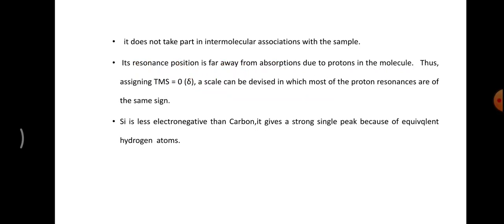Because of these reasons, the delta value assigned for TMS is 0. A scale can be devised in which most proton resonances are of the same sign. The silicon at the center is less electronegative than carbon, so TMS gives a strong single peak because of equivalent hydrogen atoms. TMS has a silicon atom at the center with four methyl groups attached. Since silicon is less electronegative than carbon, it gives a strong single peak due to the equivalent hydrogen atoms present on it.